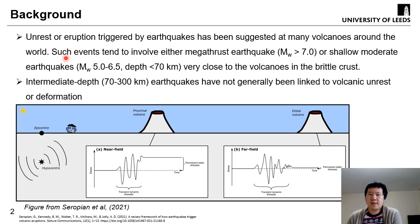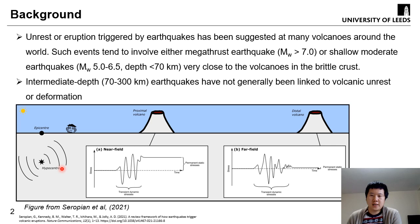Let's first give some introduction. The unrest or eruption triggered by earthquakes has been suggested at many volcanoes around the world. Such events tend to involve either megathrust earthquakes whose magnitude is above 7, or shallow moderate earthquakes whose magnitude is usually from 5 to 6.5, and depths below 70 km or even shallower, and very close to the volcanoes that can trigger them.